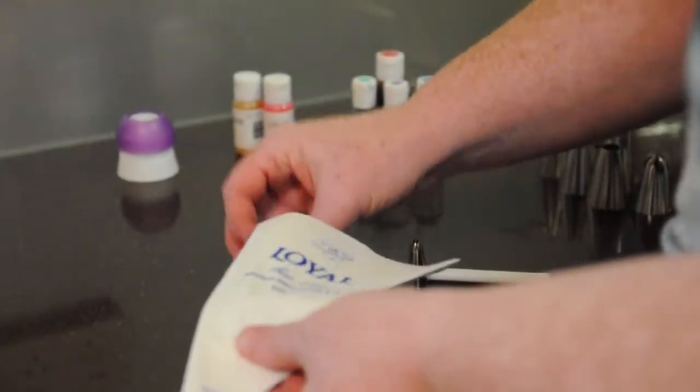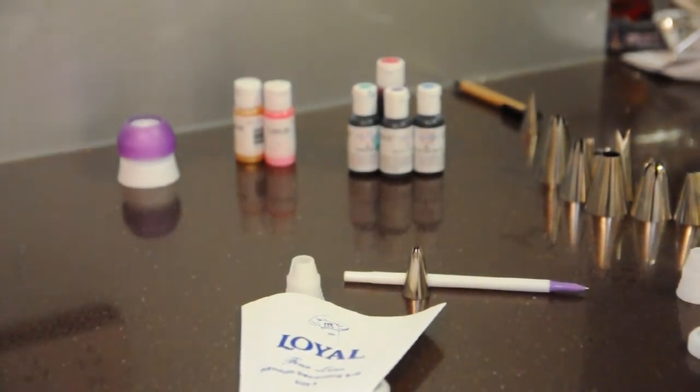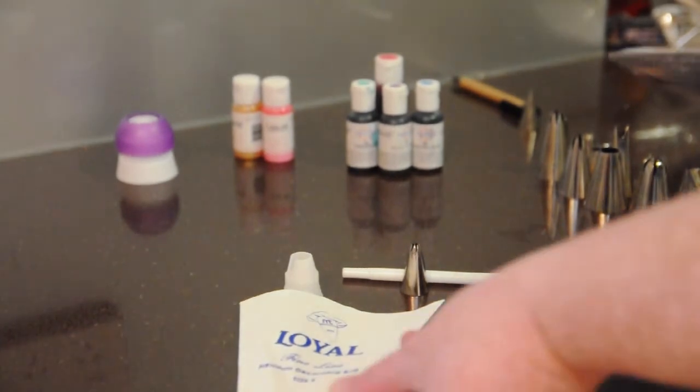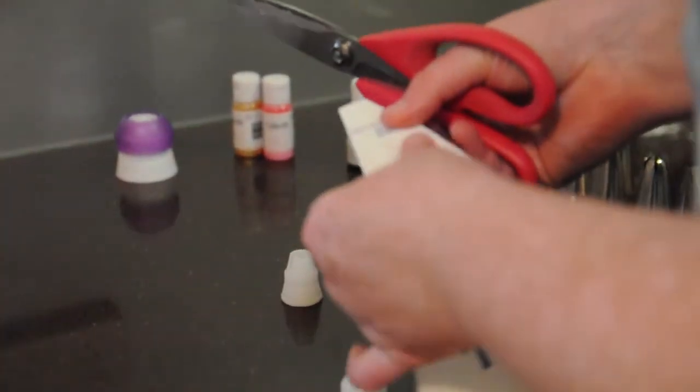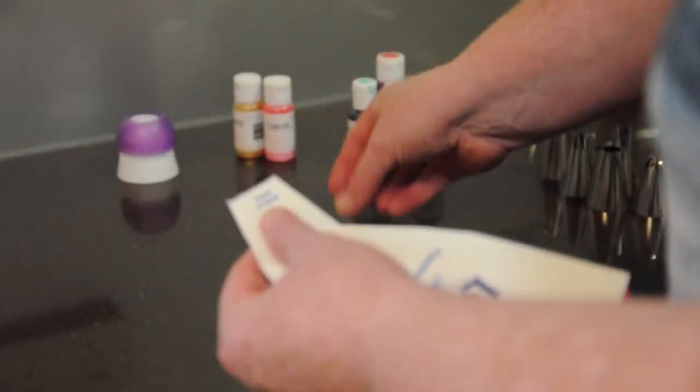Once you've finished marking your line, pop the inside of the coupler out, get a pair of scissors and cut along the line. If you're unsure, cut above the line. It is easier to cut more off; you cannot stick it back on, and the last thing you want to do is ruin a perfectly good piping bag, so less is more.